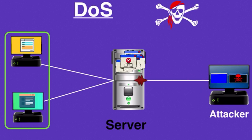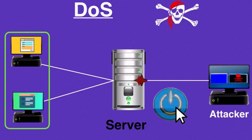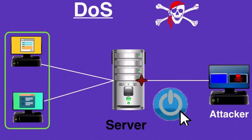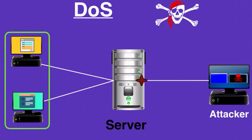A DOS attack comes from one source. Normally this type of attack is easy to deal with, simply by rebooting the computer or closing the connection where the attack is coming from. But the problem occurs when the attack comes from many sources, which is a DDoS attack.